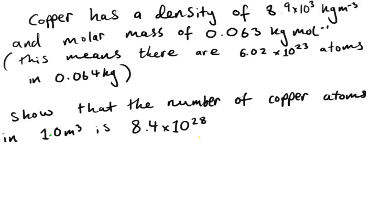So first let me just read out the question. Copper has a density of 8.9 times 10 to the 3 kilograms per meter cubed and molar mass of 0.063 kilograms per mole. And that means that there are 6.02 times 10 to the 23 atoms in 0.064 kilograms of copper. Show that the number of copper atoms in 1 meter cubed is 8.4 times 10 to the 28.